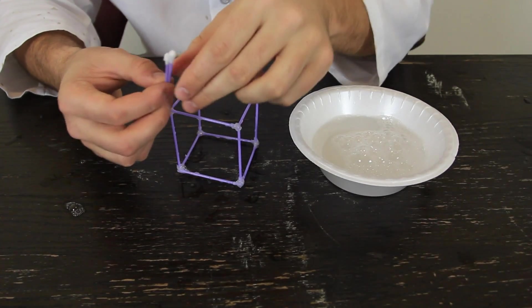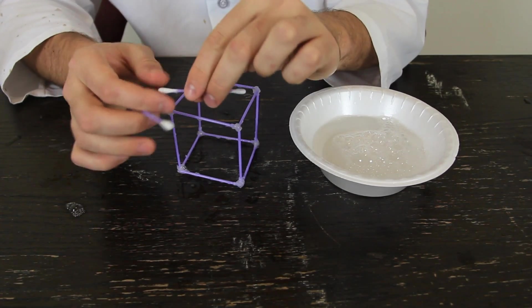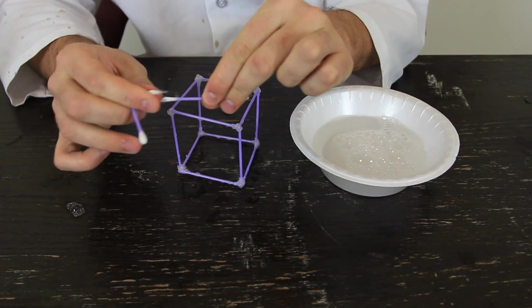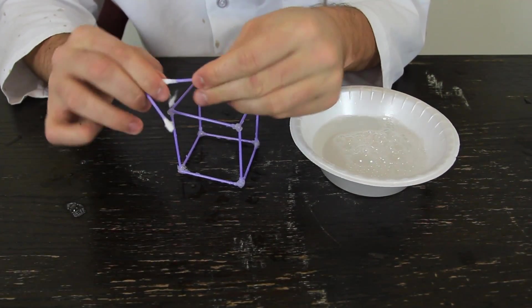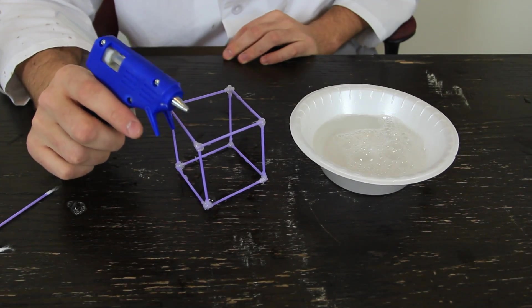For this experiment, you're gonna need Q-tips like that, 12 of them, and you wanna glue them together. As you can see, I just grabbed it and took out all this part and glued them together with the hot glue.